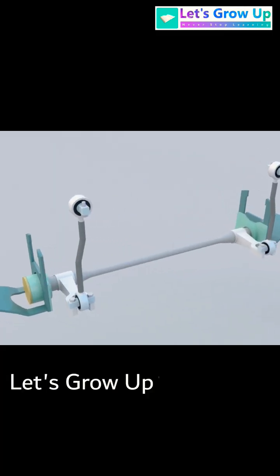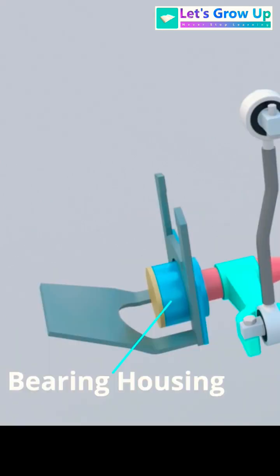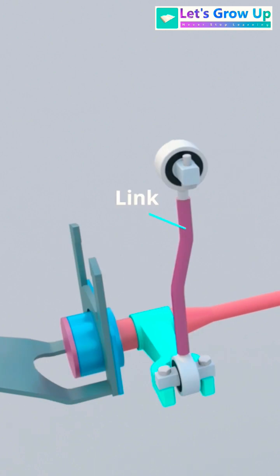The anti-roll bar assembly consists of a stabilizer lever, a torsion bar, a bearing housing, a cover plate, and a link.